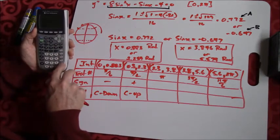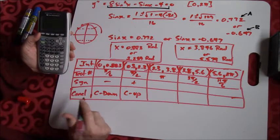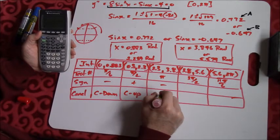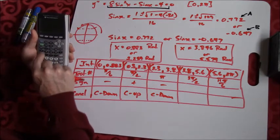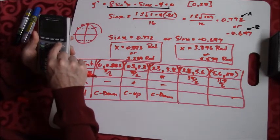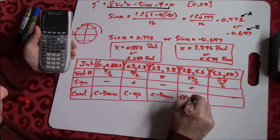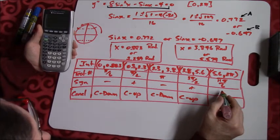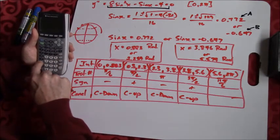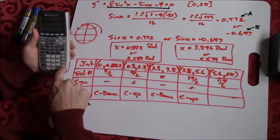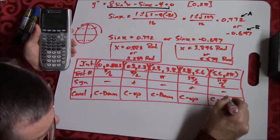I'll now take 3π/2, store that in x, go back and evaluate the second derivative expression. I get a negative number, so we are concave down on that interval as well.